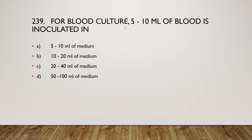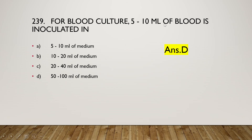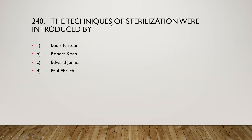Next question: for blood culture, 5–10 ml of blood is inoculated in 5 ml, 10–20 ml, 20–40 ml, or 50–100 ml of medium? The right answer is option D — 5–10 ml of blood is inoculated into 50–100 ml of medium.